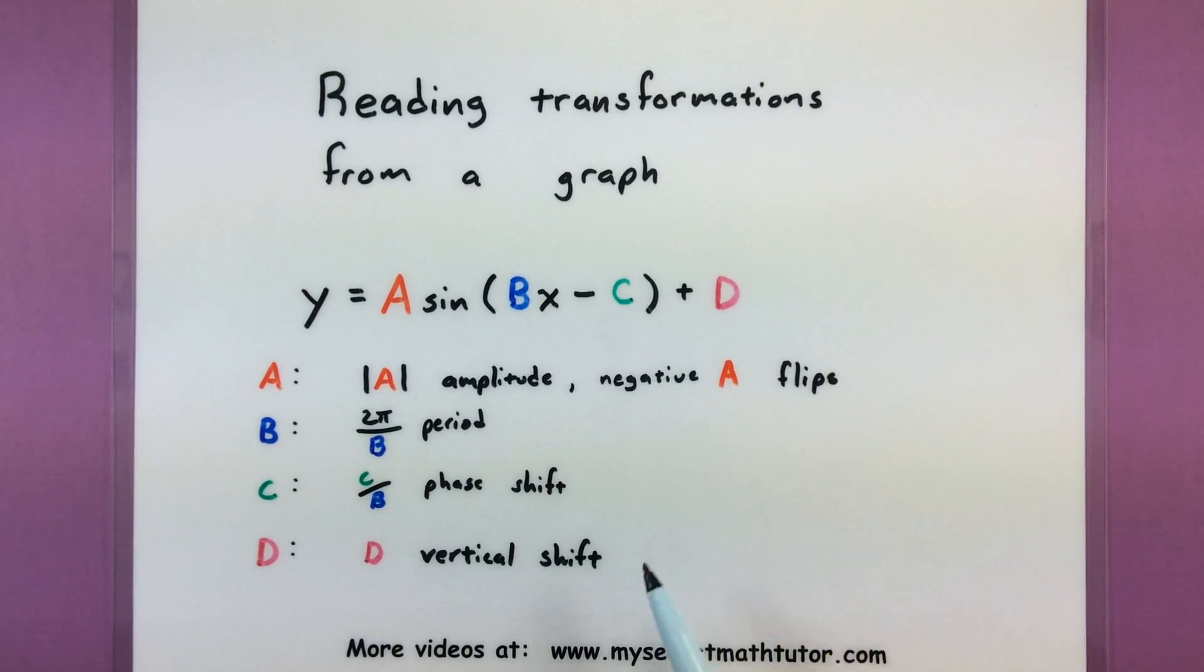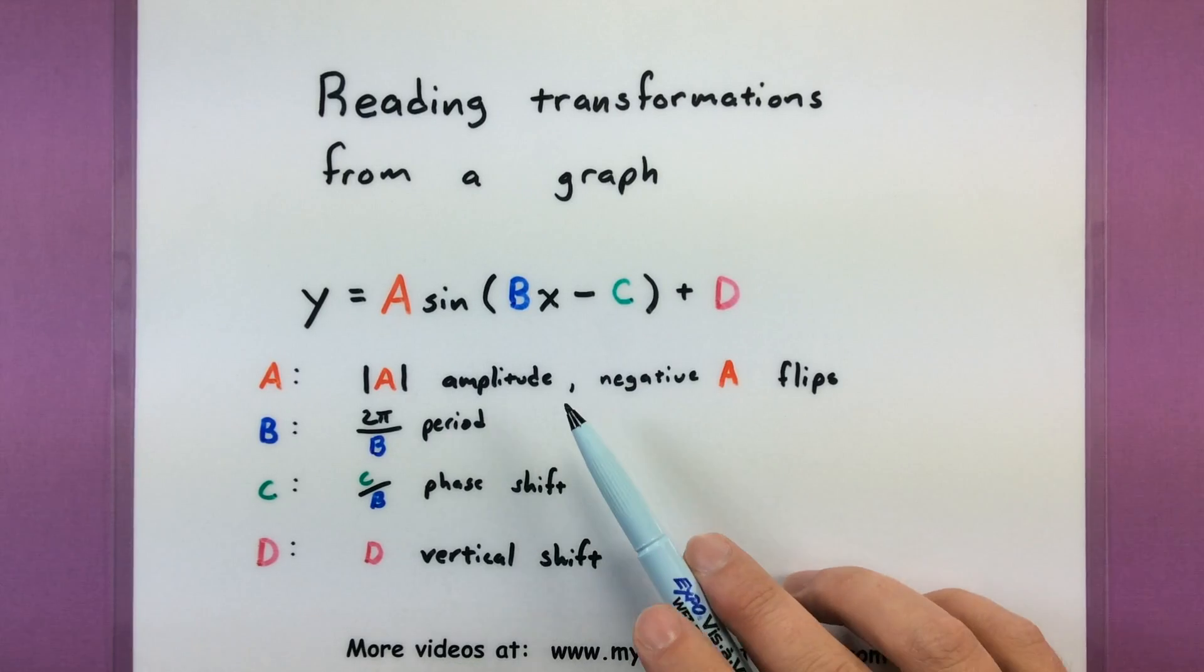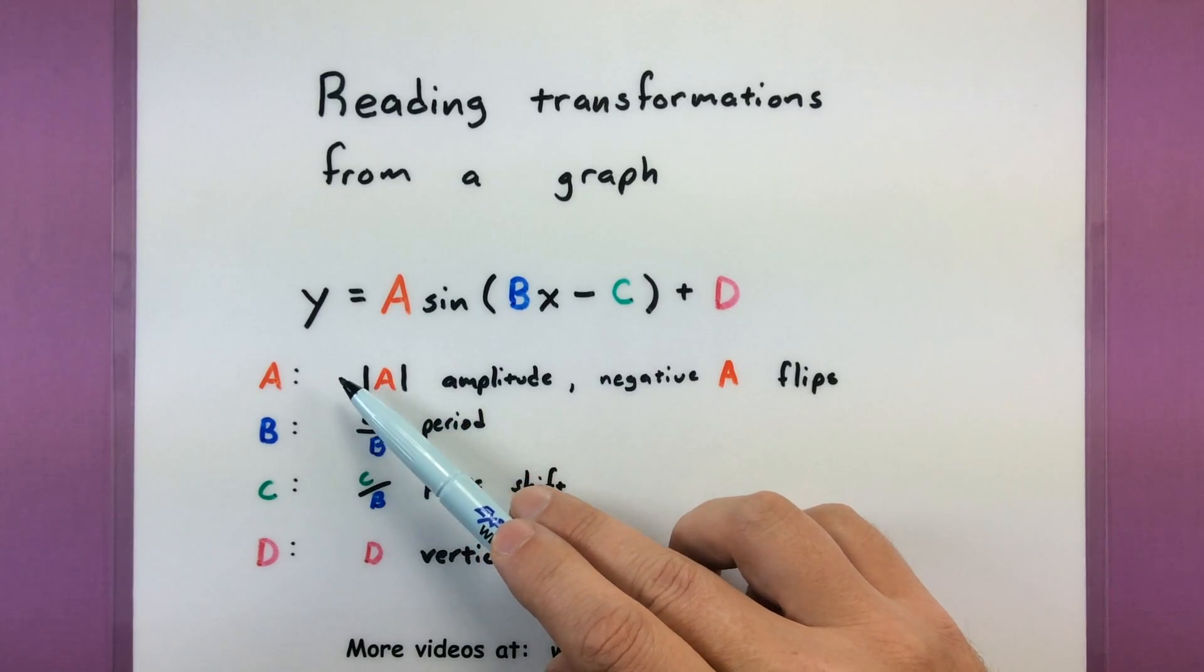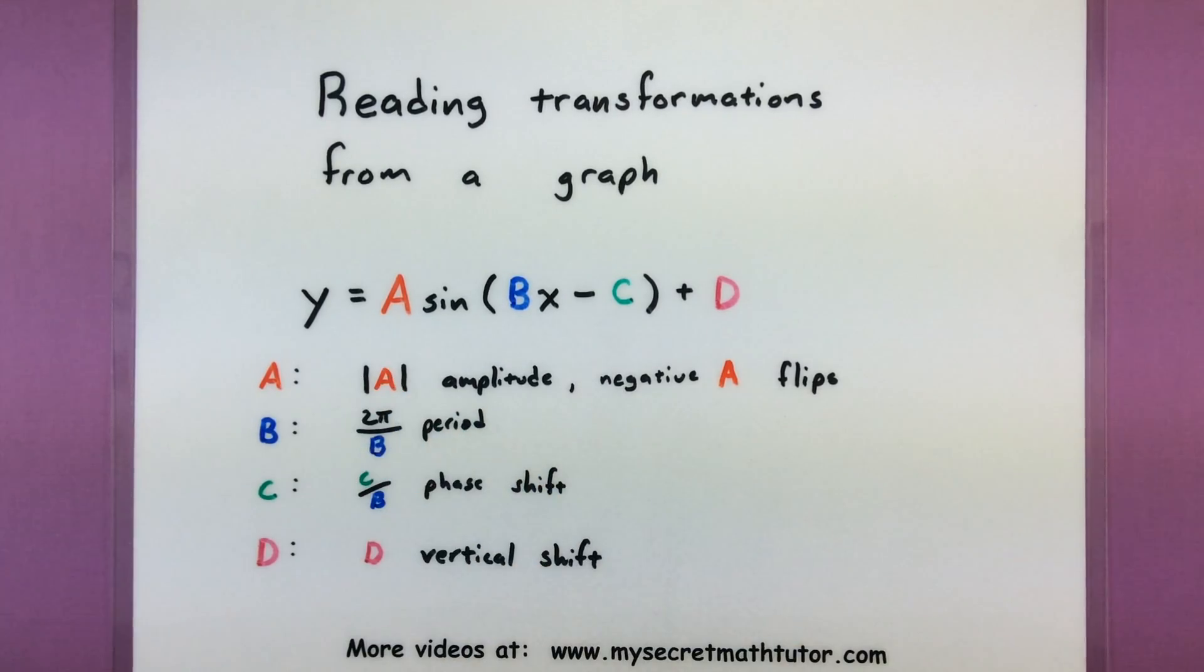In another video I went over all these different transformations but as a quick review, remember that we can figure out information about amplitude from the A value, information from the period from B, information from the phase shift using C and B, and information from the vertical shift using D. So once we see those things in the graph we'll actually work backwards and be able to figure out all of these.